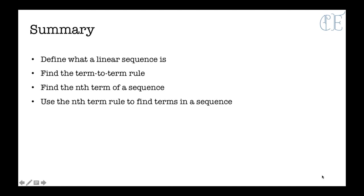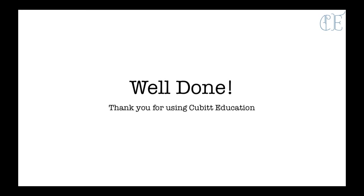To summarise: a linear sequence is where it goes up by the same value every time. You have learned how to find the term to term rule — your plus 3 or minus 2, whatever the sequence goes up in. You have found the nth term of a sequence and had a go at some questions. And you've used the nth term rule to find terms in a sequence. Well done — that was quite a lot! Thank you so much for using Cubist Education and I look forward to seeing you next time.